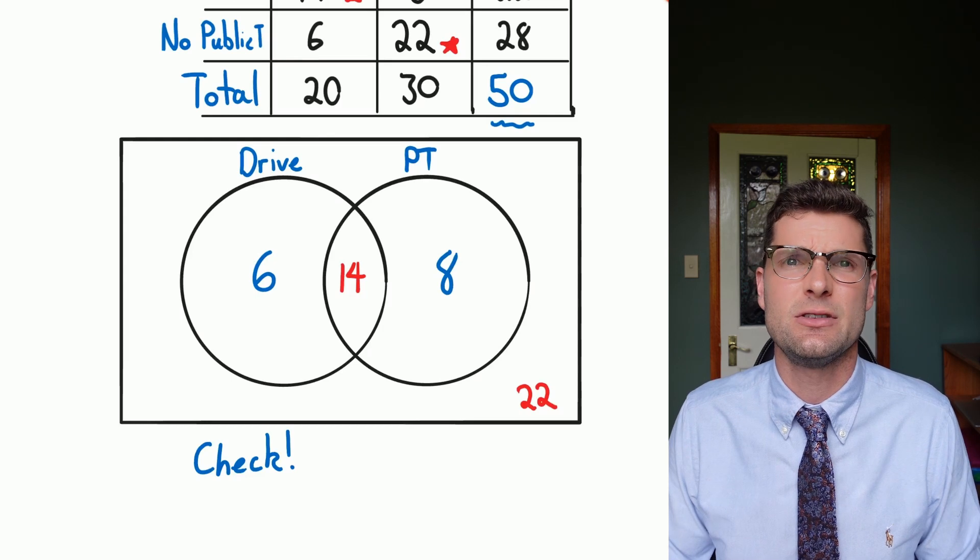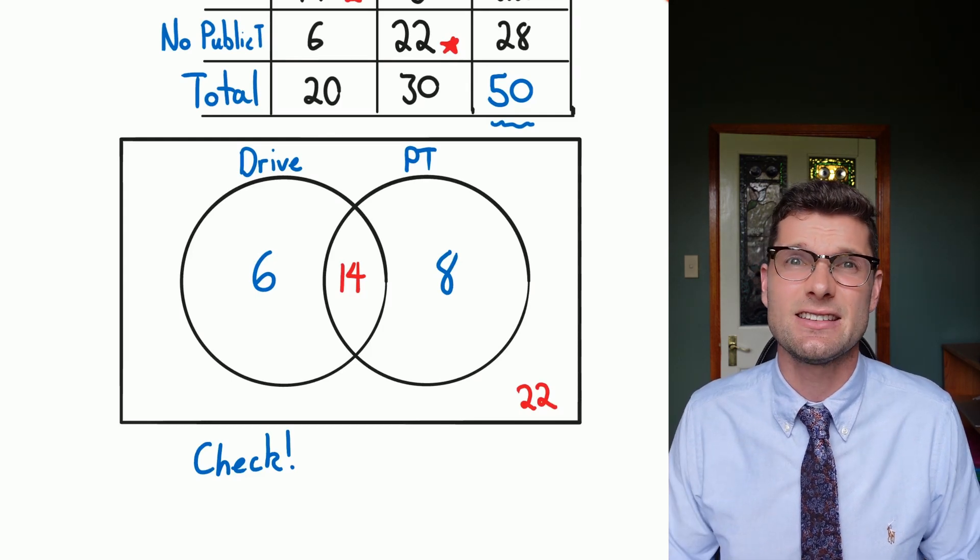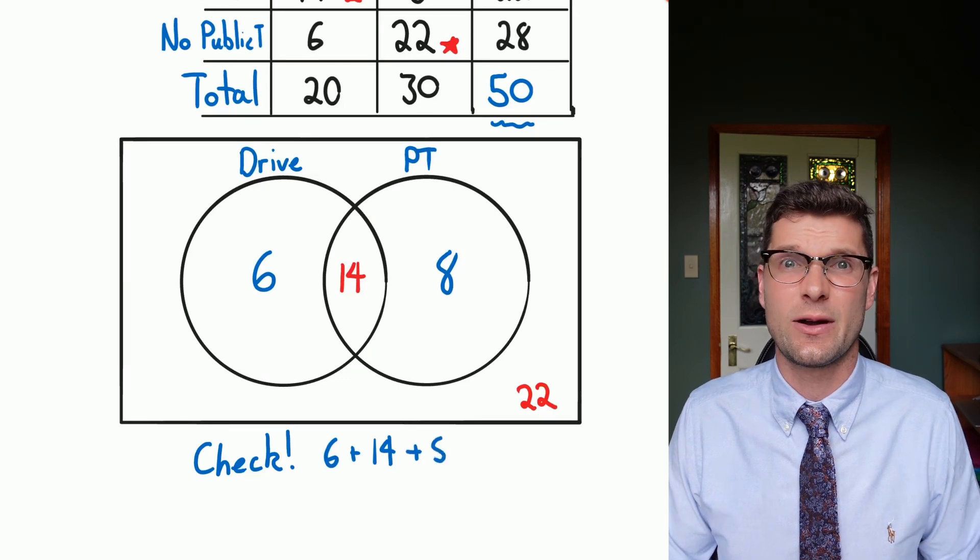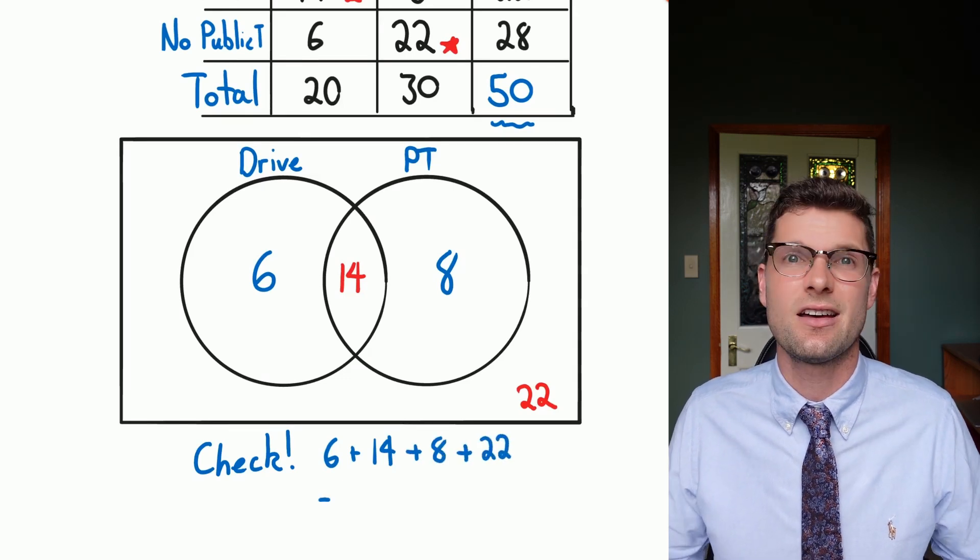So if you add up all the numbers you put in your Venn diagram, if it doesn't equal 50 you got it wrong. 6 plus 14 plus 8 plus 22 equals 50. So we got it right.